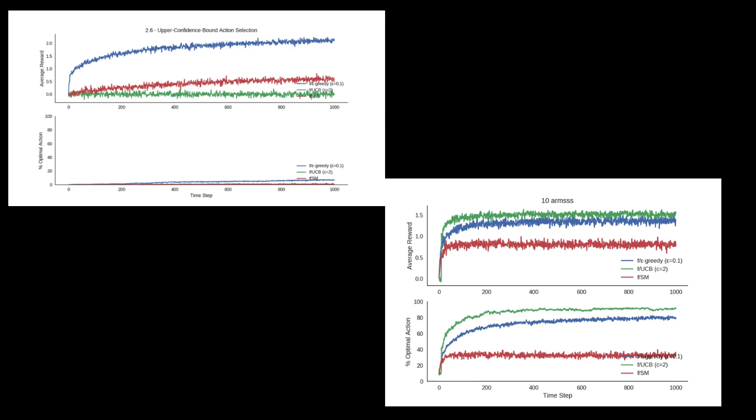So in this example, the number of iterations are 1000 across both 10 arm cases and 1000 arm cases. For UCB, it pulls all the arms at least once before it starts using confidence bound completely. For the 1000 arm case, the number of iterations is enough to just pull all the arms once and no more moves left.